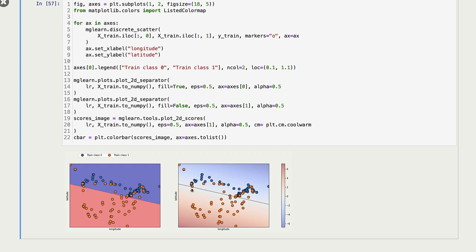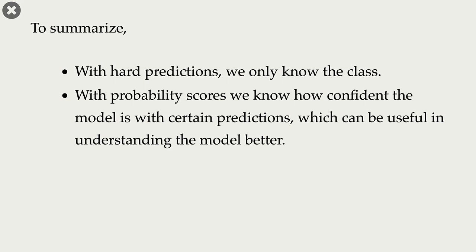Here I'm showing prediction probabilities with colors. For cities close to the decision boundary, the model will be more uncertain about its predictions. But if cities are far from the decision boundary, the model will be very confident. So that's the overall idea of getting probability scores associated with predictions. To summarize: with hard predictions, we only know the class. But with soft predictions — that is, probability scores — we know how confident the model is, which is going to be really useful for debugging and better understanding our model.